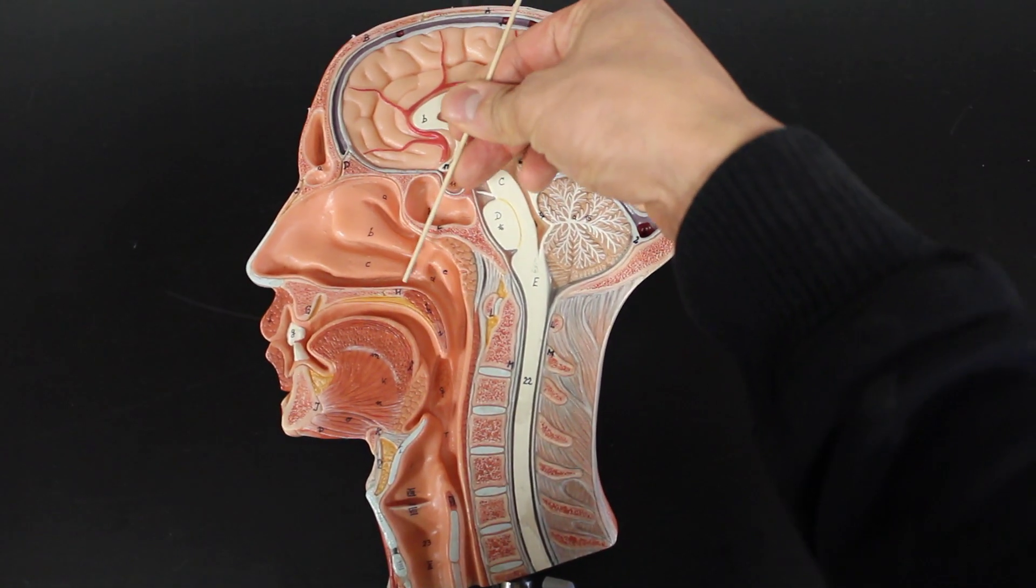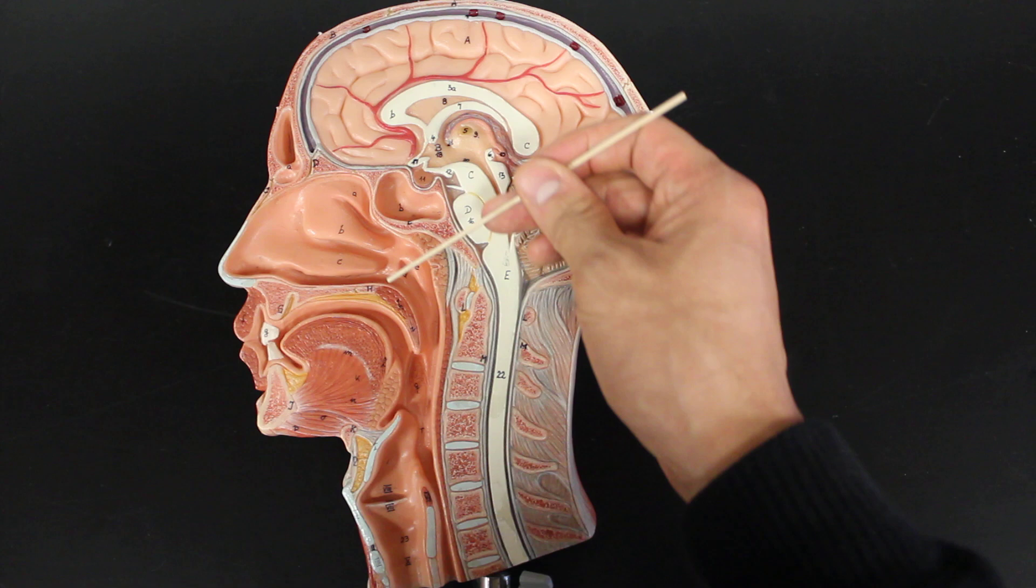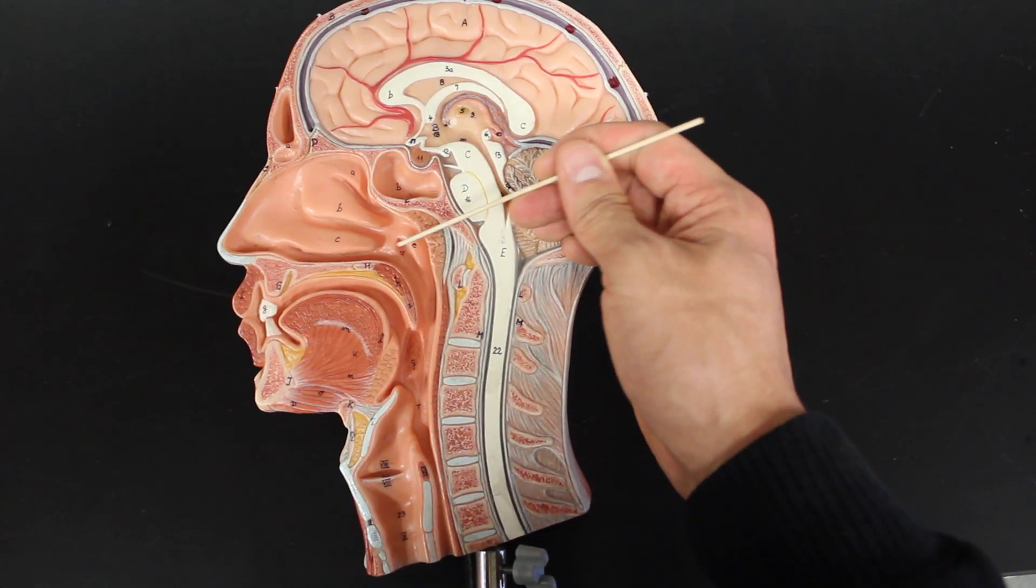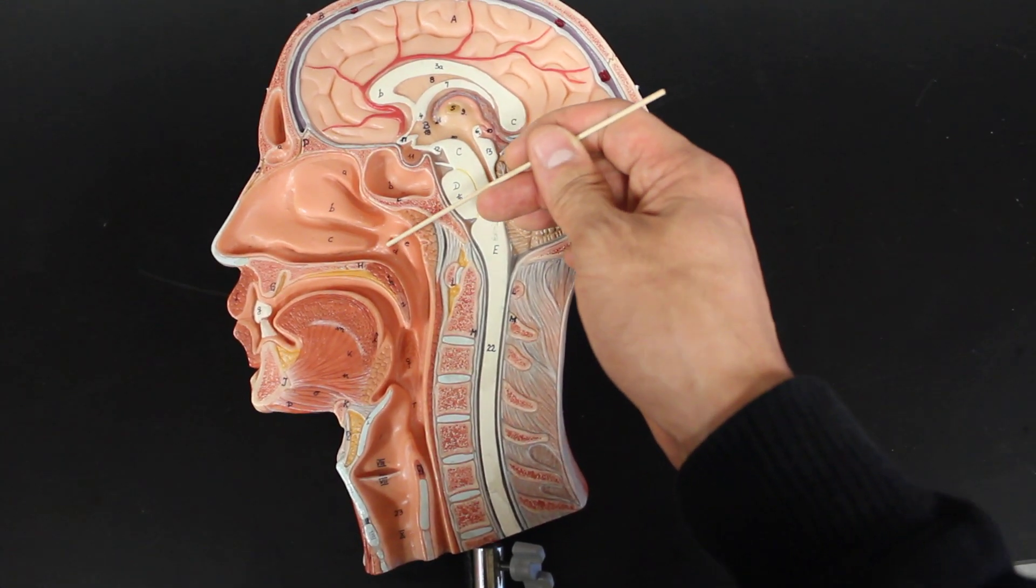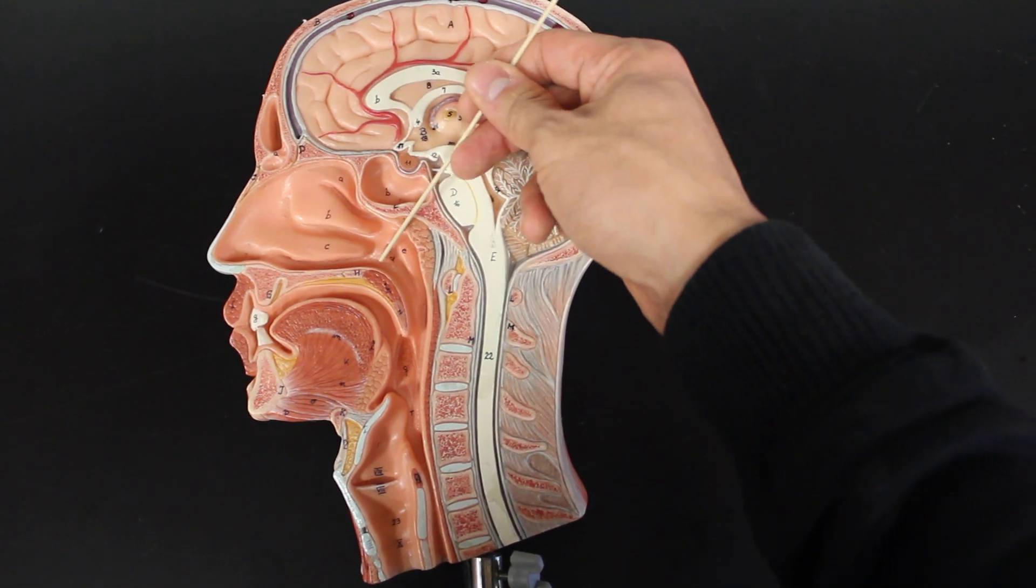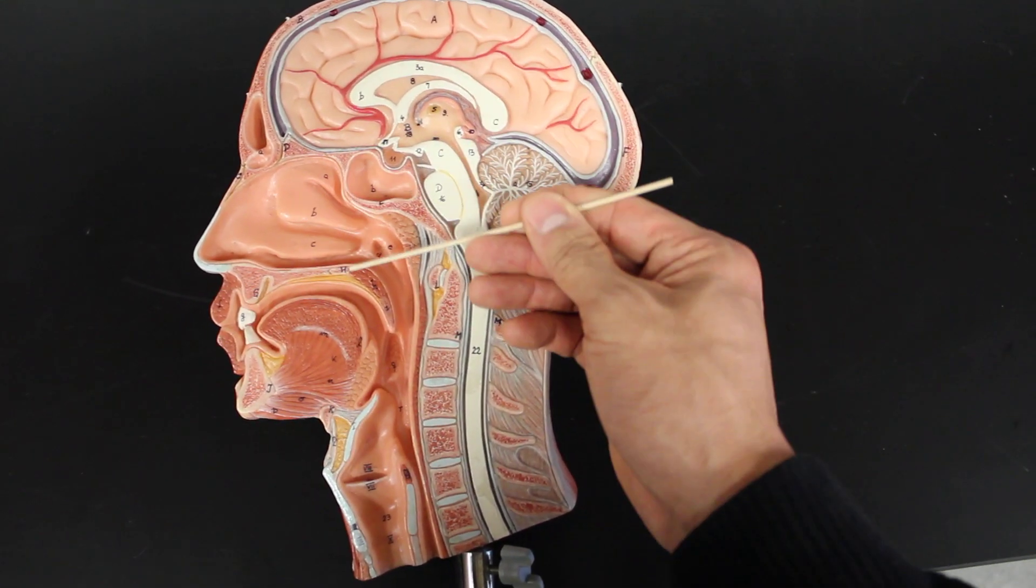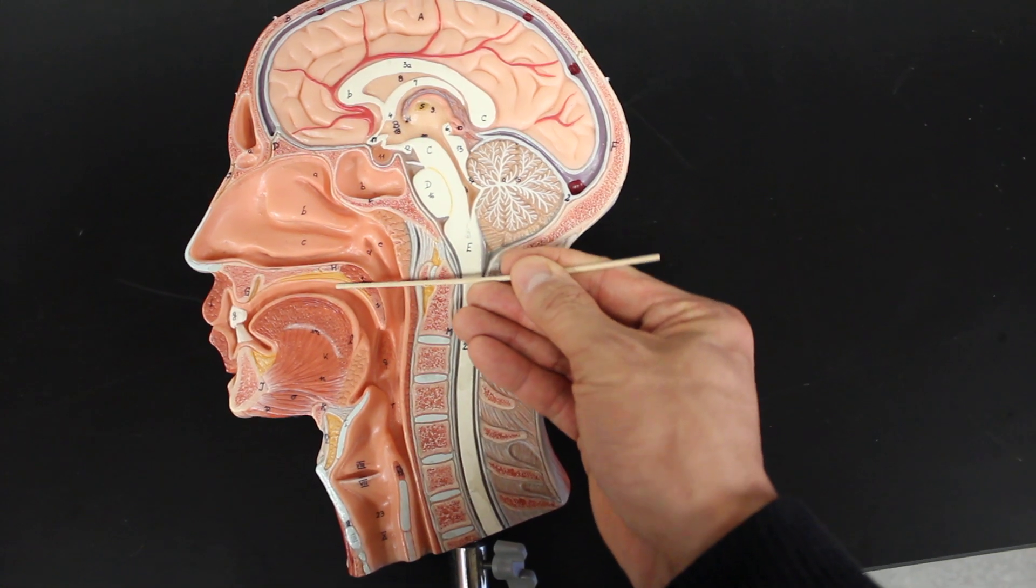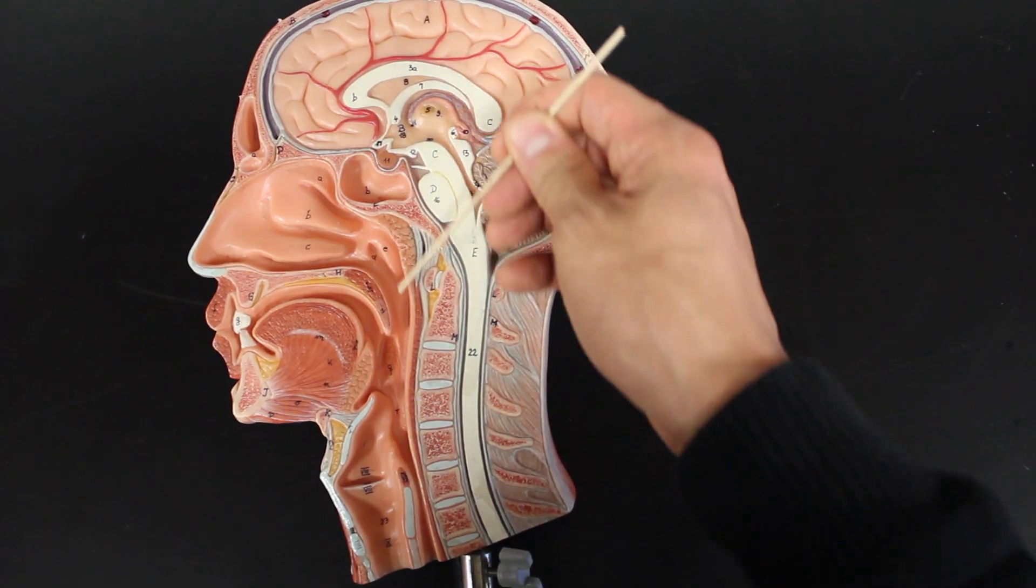Once we pass the nasal cavity, which is about right after this line, we come into what we call the pharynx. The pharynx is known aptly as the throat, and you'll find that it's divided into three major sections. The nasal pharynx, which extends from here to right about here.